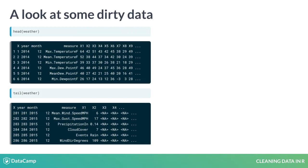At first glance, these data may not appear very dirty. The information is already organized into rows and columns, which is not always the case. The rows are numbered and the columns have names. In other words, it's already in table format, similar to what you might find in a spreadsheet document.